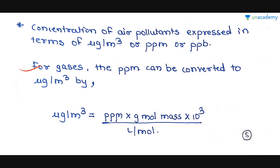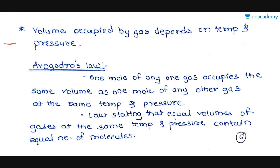For gases, PPM can be converted to micrograms per meter cube by the formula: micrograms per meter cube = PPM × molecular mass (in grams) × 10³ / (liters per mole or meter cube per mole). Detailed conversions between µg/m³, PPM, and PPB will be covered. The volume occupied by a gas depends on temperature and pressure.